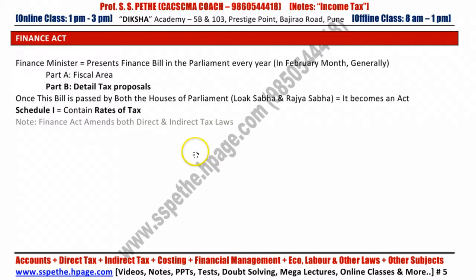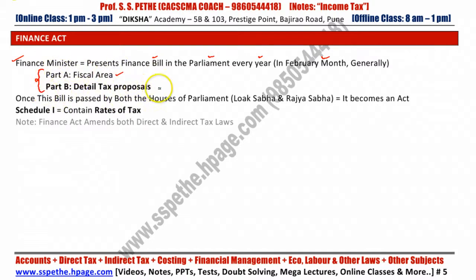Now we will talk about the Finance Act. The Finance Minister presents the Finance Bill in the Parliament every year, normally in the month of February. This Bill contains two parts: Part A is the Fiscal Area and Part B is the Detailed Tax Proposal. The Fiscal Area covers where the Government is going to spend the money, while Part B — the Detailed Tax Proposal — covers from where the Government is going to earn the revenue.